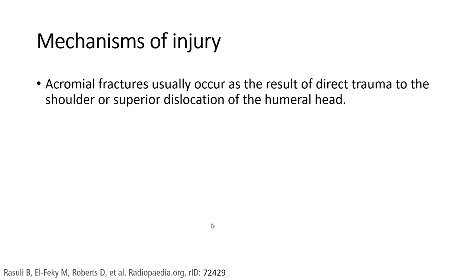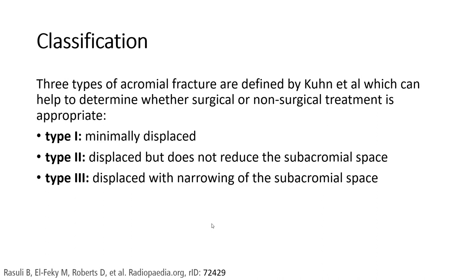Acromial fractures usually occur as the result of direct trauma to the shoulder or superior dislocation of the upper limb. There are three types of acromial fractures. Type 1 is minimal displacement. Type 2 is displaced but does not reduce the sub-acromial space. Type 3 is displaced with narrowing of the sub-acromial space.